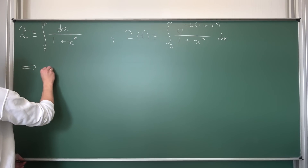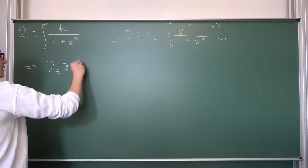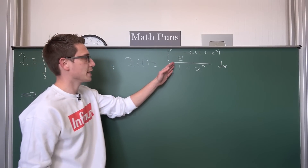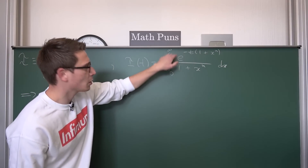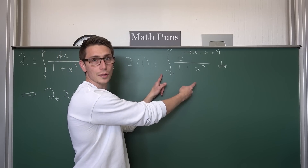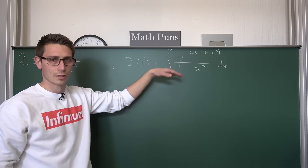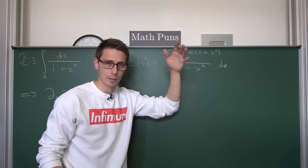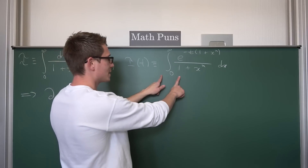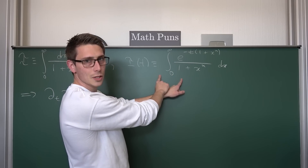What happens if we take the derivative of I with respect to t? We differentiate the whole expression. Since the upper and lower bounds are not dependent on t, we are just going to interchange our integral and our differential without any restrictions, under the condition that everything converges absolutely — a lot of conditions to check — but we are going to assume we can safely interchange the differential and our integral.